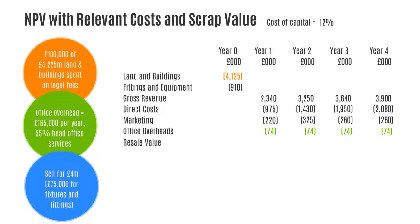Finally, we're informed that Buzzing Batteries intend to sell the new stores at the end of the fourth year for £4 million, which includes £75,000 on fixtures and fittings. All of these costs are relevant, so the full £4 million goes into the pro forma, and now we can go ahead with the same process as in the basic NPV example.